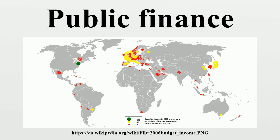Government can pay for spending by borrowing. Although borrowing is a method of distributing tax burdens through time rather than a replacement for taxes, a deficit is the difference between government spending and revenues. The accumulation of deficits over time is the total public debt. Deficit finance allows governments to smooth tax burdens over time and gives governments an important fiscal policy tool. Deficits can also narrow the options of successor governments.